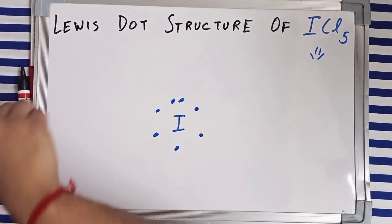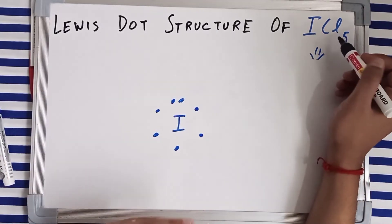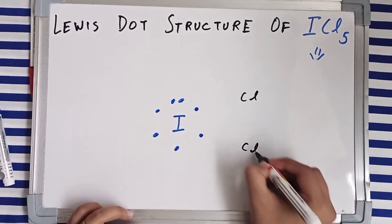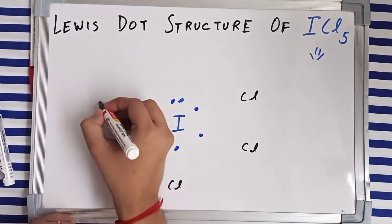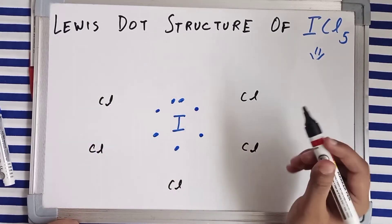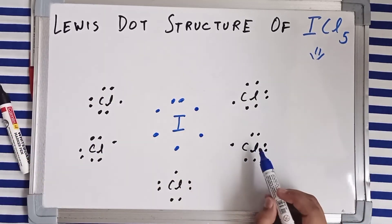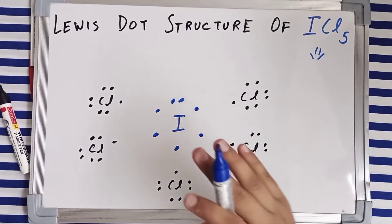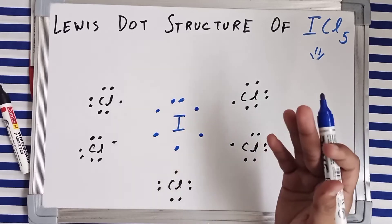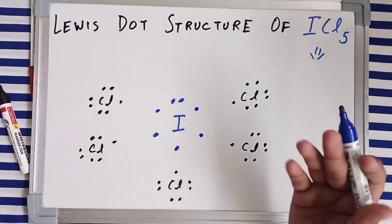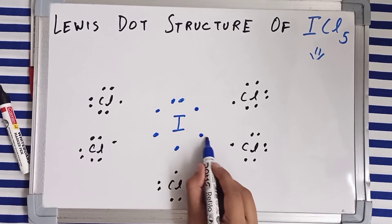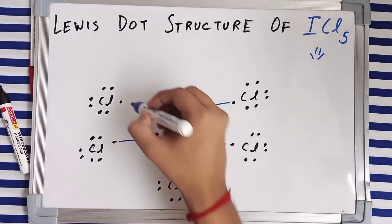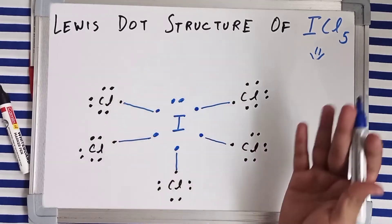We have five chlorine atoms, each also having seven valence electrons — one, two, three, four, five. Each chlorine has seven valence electrons and needs just one more electron to complete its octet and gain stability. So each chlorine makes a single bond with iodine, and after bond formation they have all completed their octets.